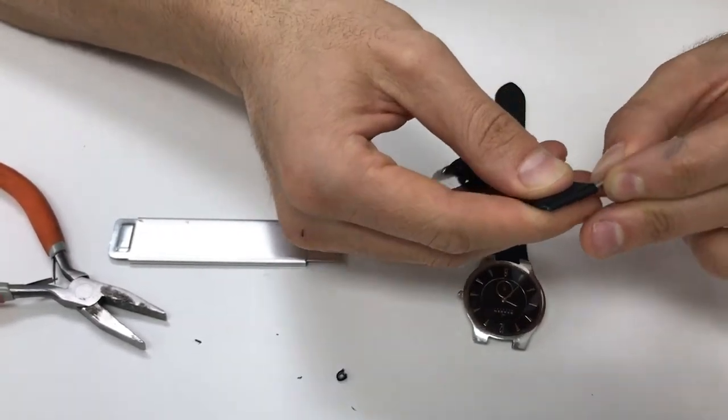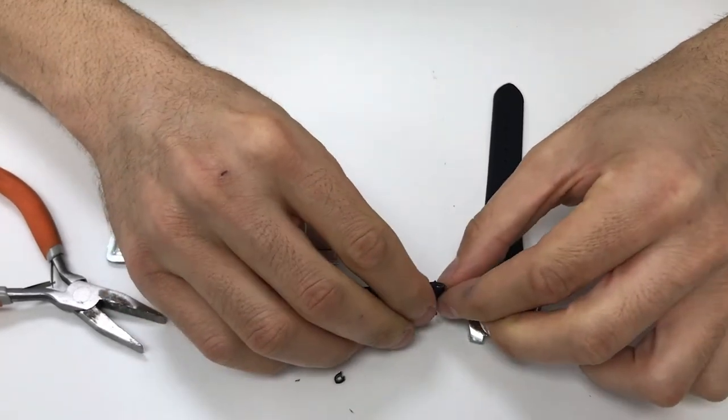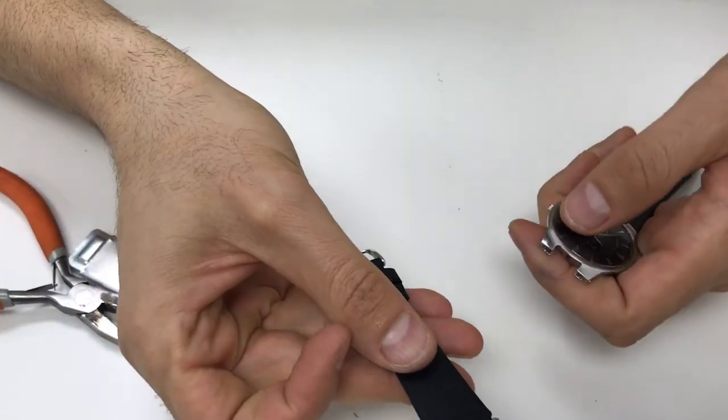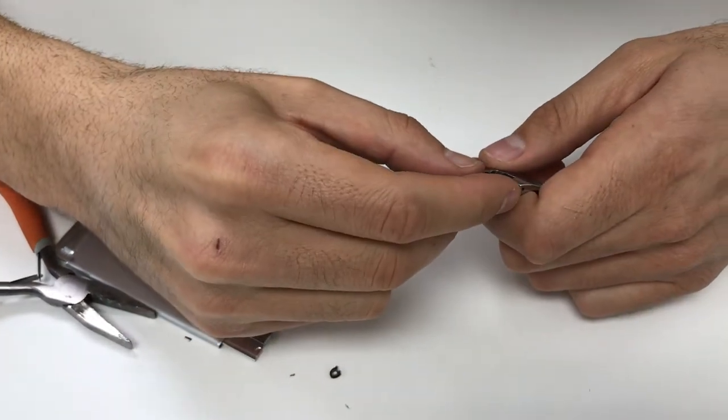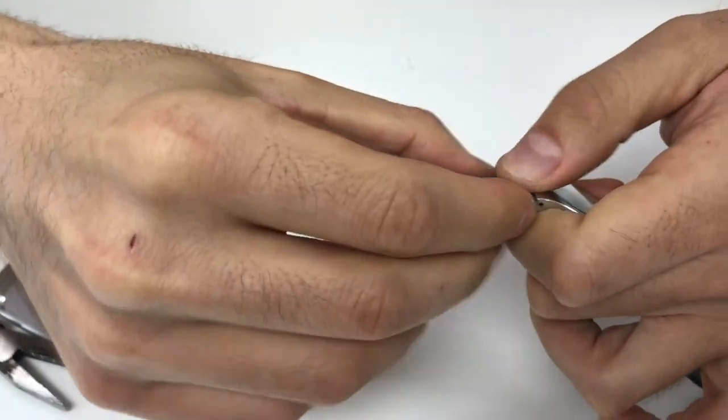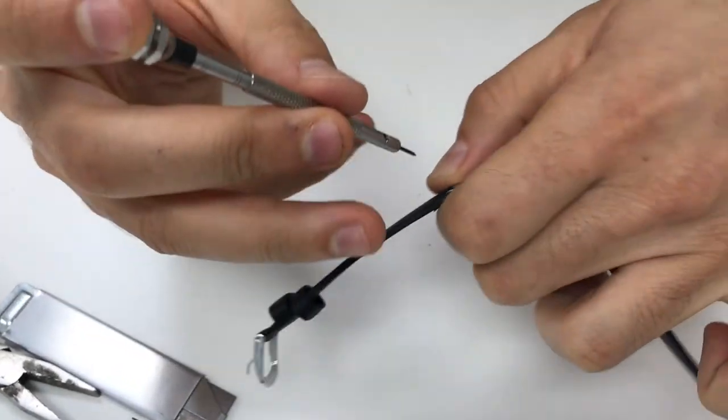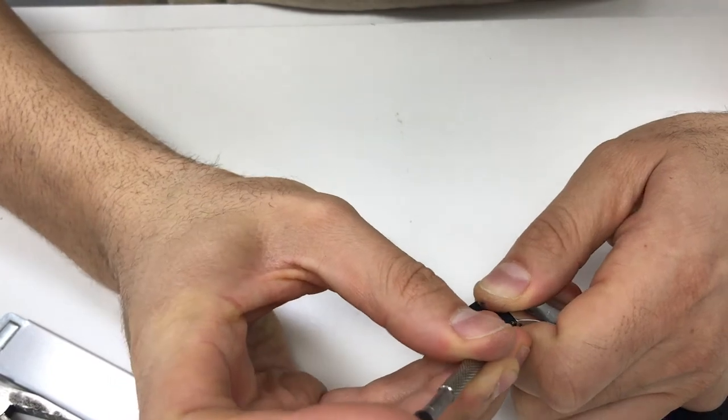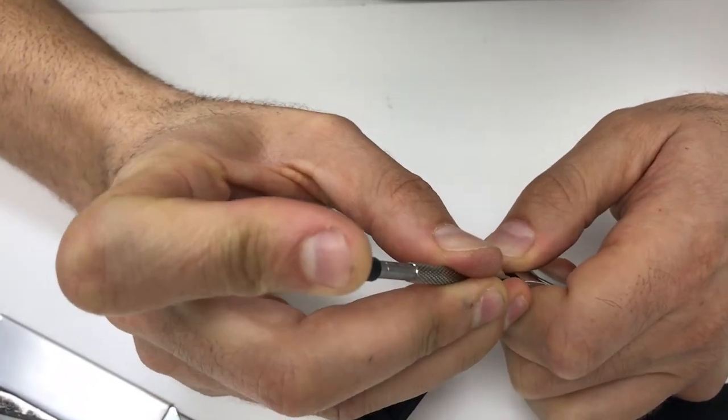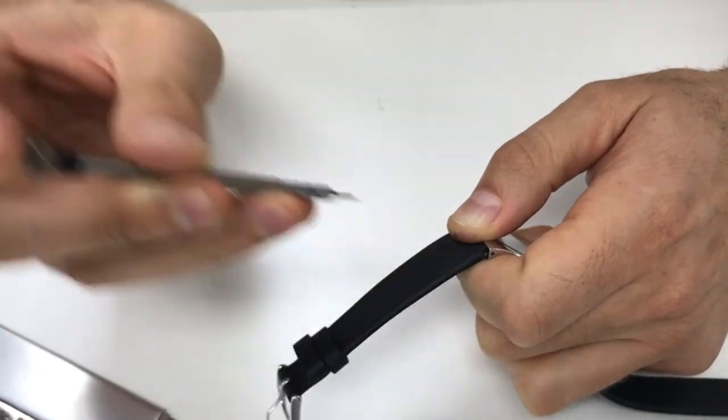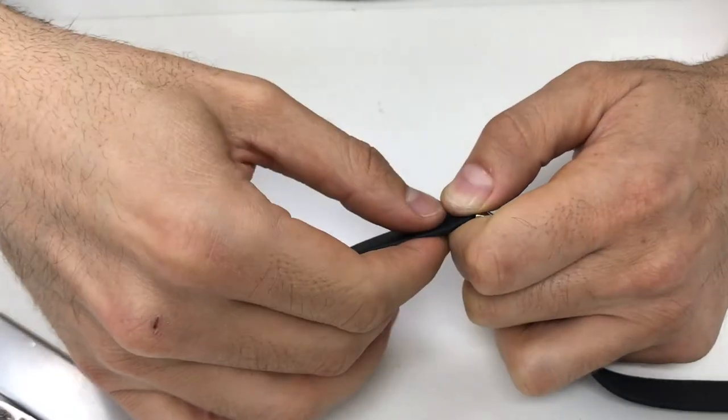So here we go, got the spring bar showing on both sides and I'm going to go ahead and attach that. Trying to do this so that you can see, but pushing it in with my flathead screwdriver right here. I push the spring bar down, push it in until I hear it click and connect with the hole here. Perfect.